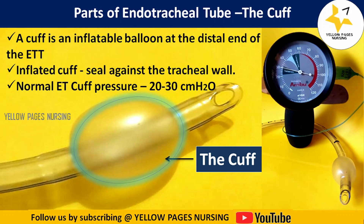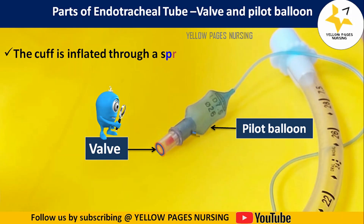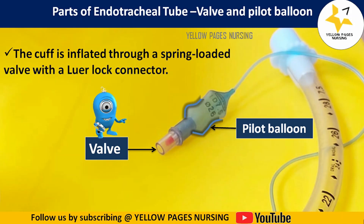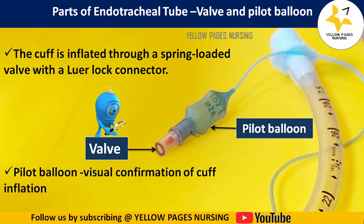There are two types of cuffs: high volume low pressure cuffs and low volume high pressure cuffs. The cuff is inflated through a spring-loaded valve with a luer lock connector. Just above this is a pilot balloon which visually confirms the cuff inflation, but ideally cuff pressure should be checked by a cuff pressure manometer.